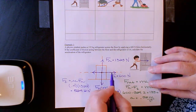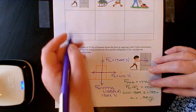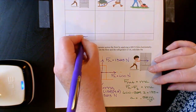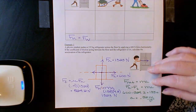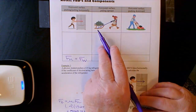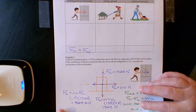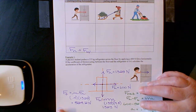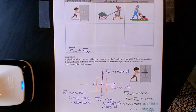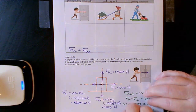When you push horizontally, we notice that Fn does equal Fw. But the point of this lesson is: when you pull at an upward angle, or push at a downward angle, Fn does not equal Fw. That is the main point we are going to be looking at, and we have two examples of that.